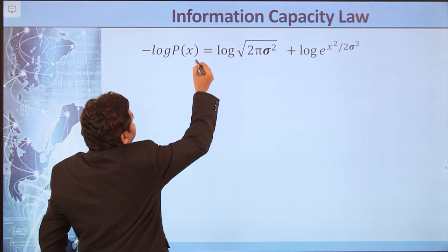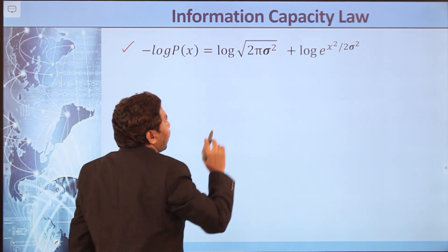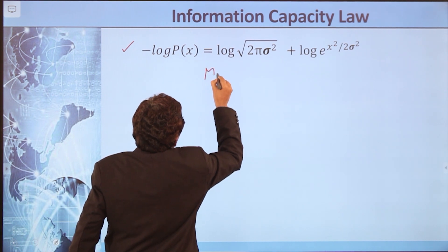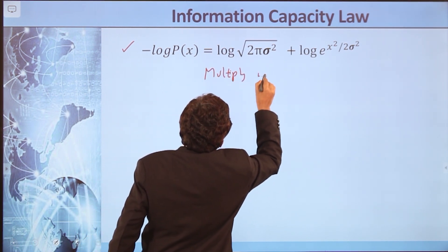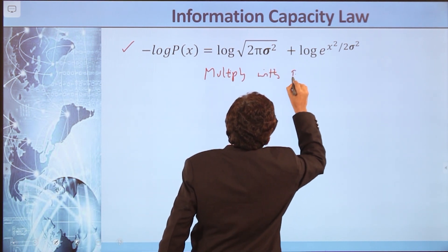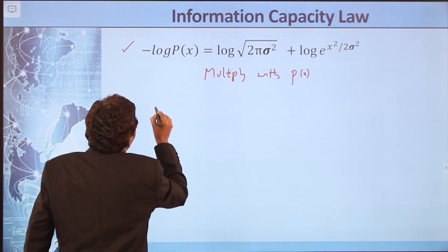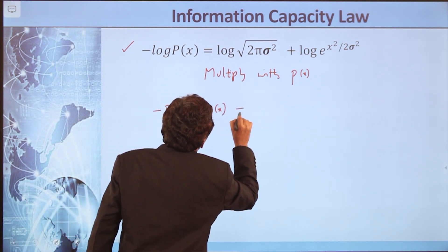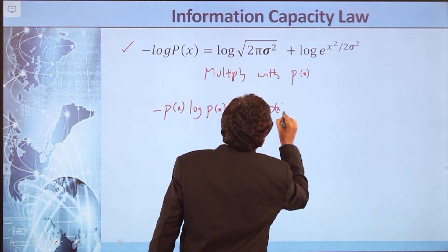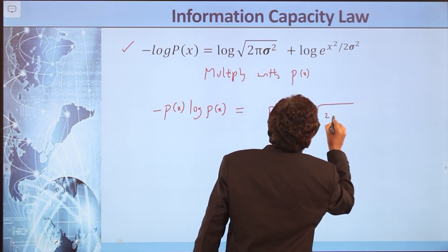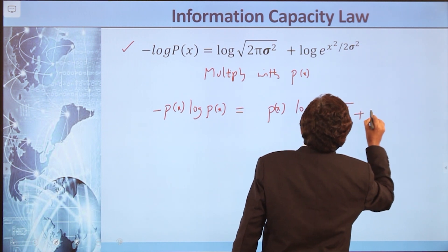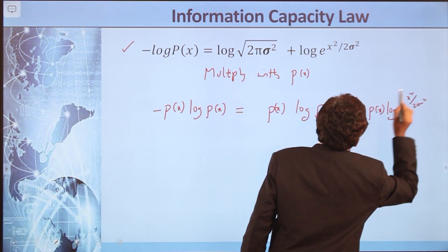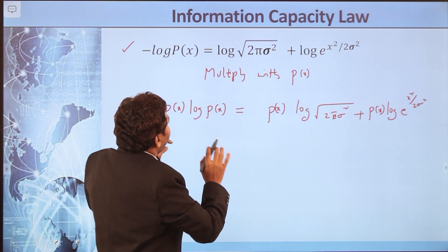Which is equal to: −log P(x) = log√(2πσ²) + log e^(x²/2σ²). The next step is to multiply both sides by P(x). By multiplying with P(x) it becomes: −P(x)·log P(x) = P(x)·log√(2πσ²) + P(x)·log e^(x²/2σ²).